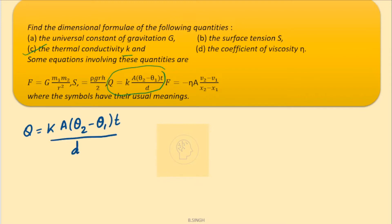q here is heat, k is the constant of thermal conductivity k, A is the area, theta 2 minus theta 1, that is the temperature difference, t is the time and small d here is the length, the separation between the two ends.